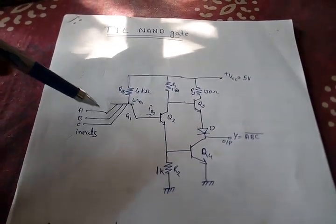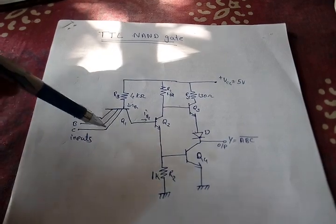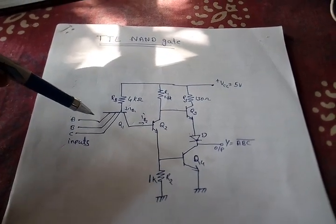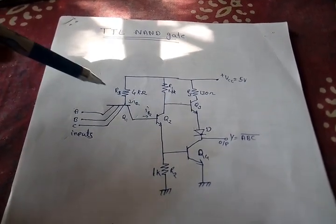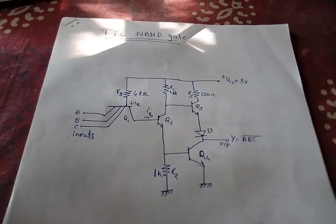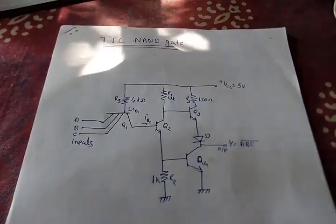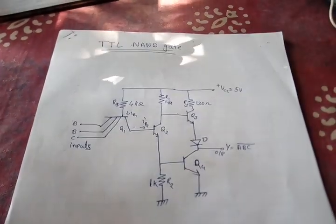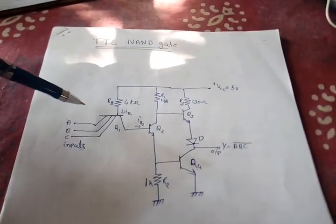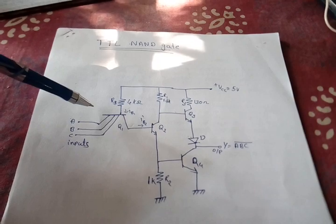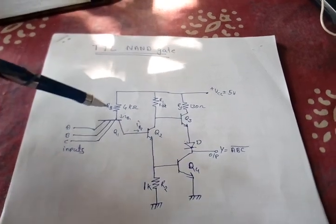The number of inputs, the number of emitters of this transistor, is the input of this circuit. That is, the number of emitters depends on the number of inputs we want. If we want three inputs, then we have to employ a three-emitter transistor.